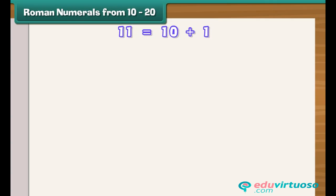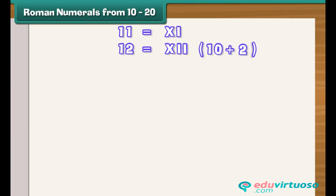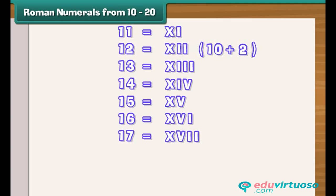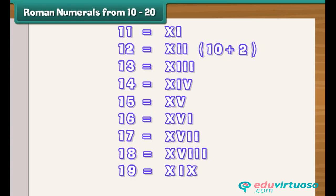11 is 10 plus 1, so number 11 is written as XI, meaning 10 plus 1. Number 12 is written as XII, meaning 10 plus 2. Similarly, 13 is written as XIII. 14 is XIV. 15 is XV. 16 is XVI. 17 is XVII. 18 is XVIII. 19 is XIX. 20 is XX.